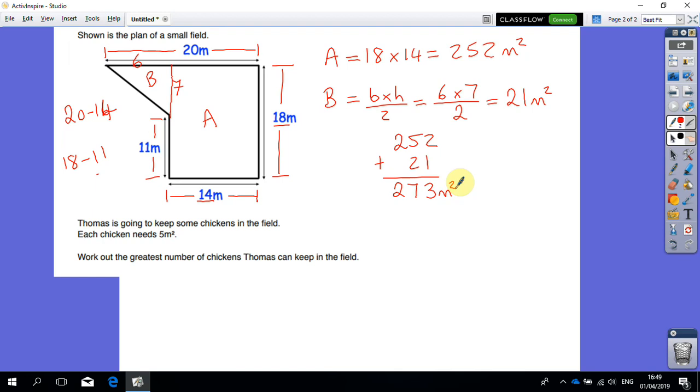Thomas is going to keep some chickens in the field. Each chicken needs 5 meters squared. We need to work out the greatest number of chickens. So we're going to do 273 divided by 5, and the answer we get is 54.6. Obviously I can't have 0.6 of a chicken, and in this case I need to round down, so it's a total of 54 chickens maximum.